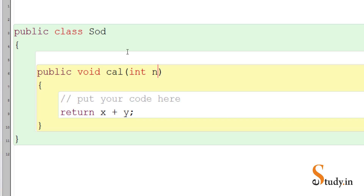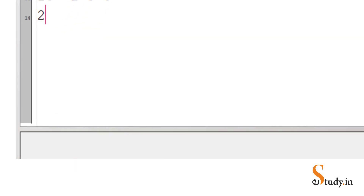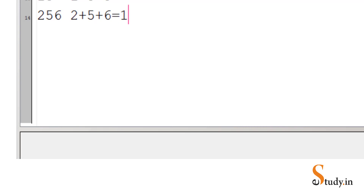Here n is the number whose sum of digits we are going to find. What do we mean by sum of the digits of a number? Let's say if the user enters 256, in that case the output should be 2 plus 5 plus 6, that means 2 plus 5 is 7 and 7 plus 6 is equal to 13.